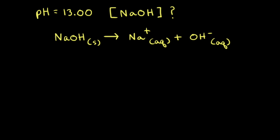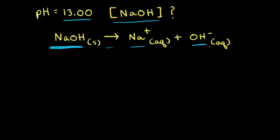Let's do a problem with a group 1A metal hydroxide: sodium hydroxide. Let's say the pH of the solution is 13.00 and our goal is to calculate the initial concentration of sodium hydroxide. First, we write out the dissolution equation. Solid sodium hydroxide dissociates completely in water to form sodium cations and hydroxide anions in solution.